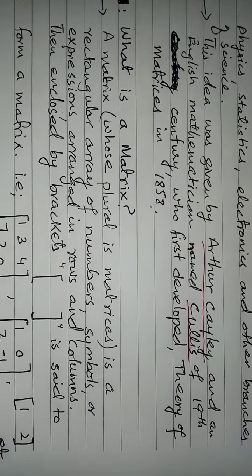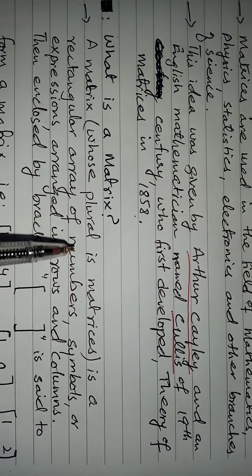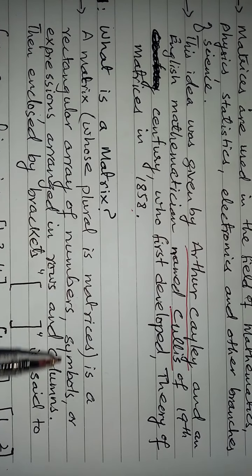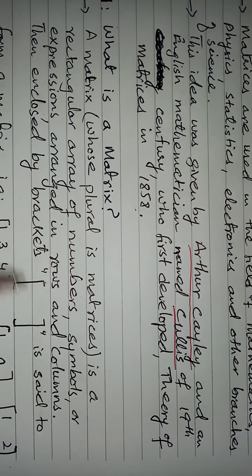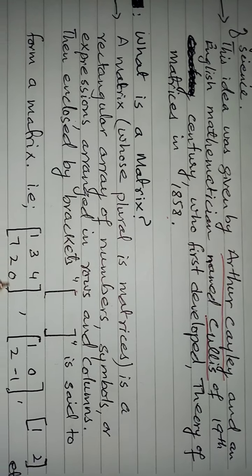What is a matrix? A matrix whose plural is Matrices. Matrices is a rectangular array of numbers, symbols or expressions arranged in rows and columns, then enclosed by brackets. This is a rectangular array.